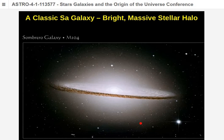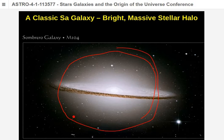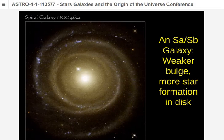Here's a classic Sa galaxy — unusual in that it has such a dense halo you can literally see it as starlight, though typically stellar density in the halo is too low to see. It's got a disk and dust — a great example, the Sombrero galaxy. Here's an Sb-type galaxy: blue means massive hot stars and active star formation, concentrated in the spiral arms — that's why spiral arms are bright.